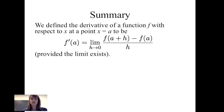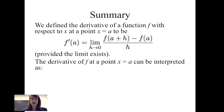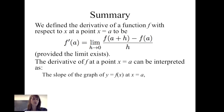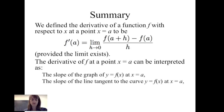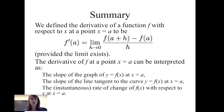In summary, we define the derivative of function f with respect to x at a point x equals a as f prime of a equals the limit of f(a+h) minus f(a) divided by h, as h goes to 0, provided that limit exists. We can interpret the derivative at x equals a in multiple ways: as the slope of the graph of y equals f(x) at x equals a, as the slope of the tangent line to the curve at x equals a, and as the rate of change of f with respect to x at x equals a.